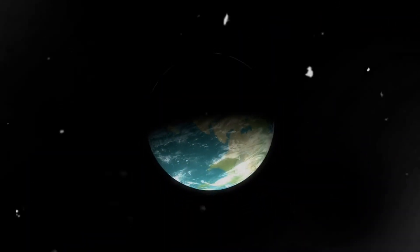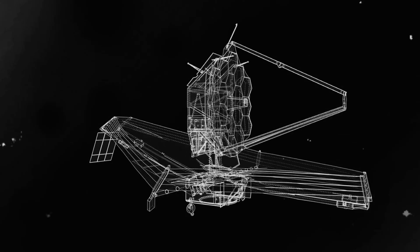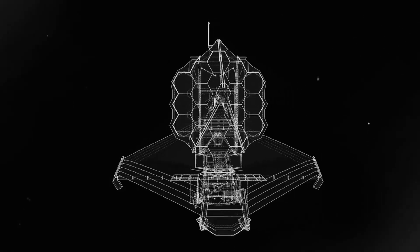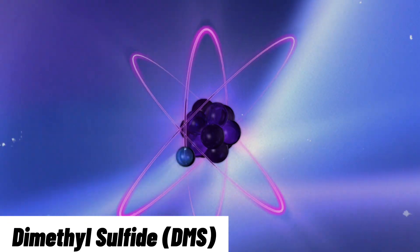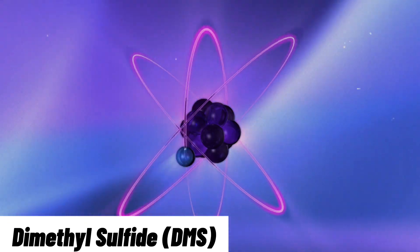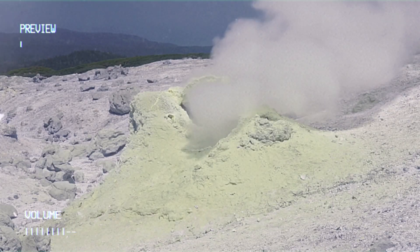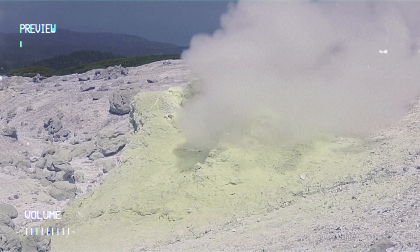However, there's more to this story. Another noteworthy discovery by the James Webb Telescope is the identification of the molecule dimethyl sulfide, or DMS, in the atmosphere of K-218b.